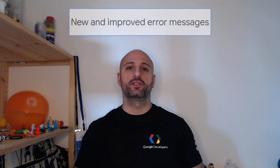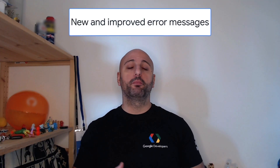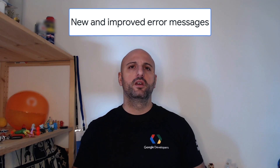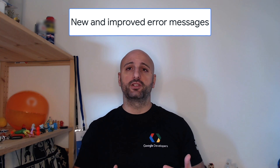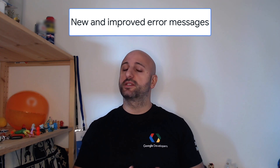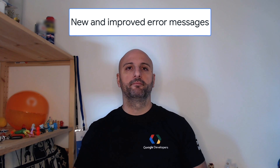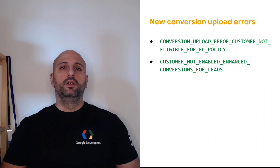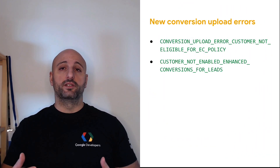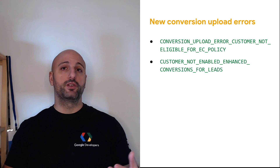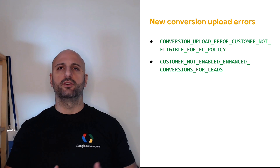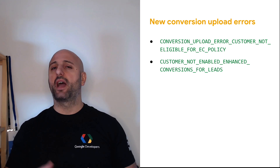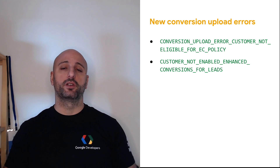There are many new error messages in version 13 to help you implement automatic error handling and debugging. For instance, you will now receive a clearer error message when trying to create an account budget proposal with a billing setup that is not in state approved. You will also receive clearer error messages when trying to work with enhanced conversions without having completed the required setup, or if you upload PII in your conversion upload request without having accepted the specific terms and conditions.